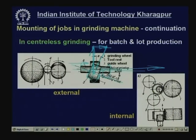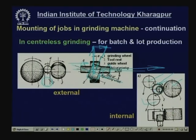For internal centerless cylindrical grinding — for example, grinding the inner or outer surface of a ring — the ring is supported by two guide rollers that keep it in position, and a guide wheel makes the ring rotate. For the outer surface, a grinding wheel grinds the outer surface while the guide wheel drives rotation. For the inner surface, a smaller grinding wheel operates inside the ring while the guide wheel makes the ring rotate to finish the inner surface.